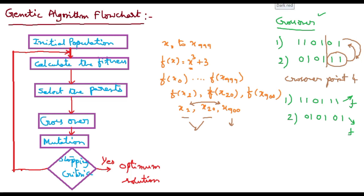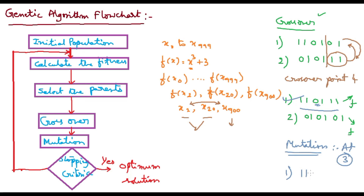Mutation is very simple — compared to crossover, mutation is very simple. Mutation means, for example, if this is the updated crossover result and I want to perform mutation at point 3 — the third point is 0 — mutation means if 0 is there, convert it into 1; if 1 is there, convert it into 0. So the first parent becomes 1, 1, 1, 1. And if I do the same mutation at point 3 for the second parent also, it will become 0, 1, 1, 1, 0. Very simple.